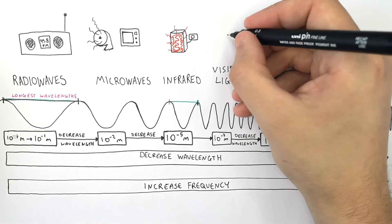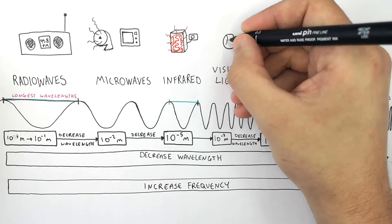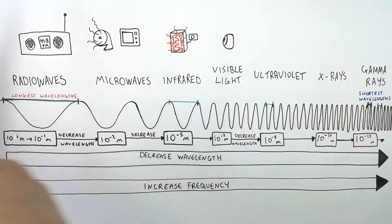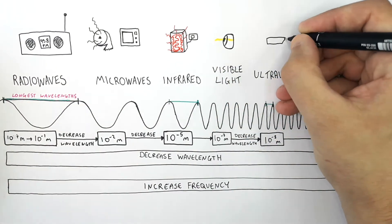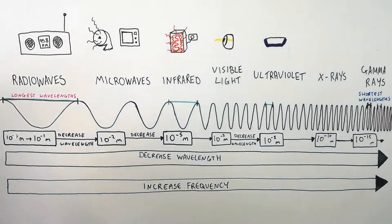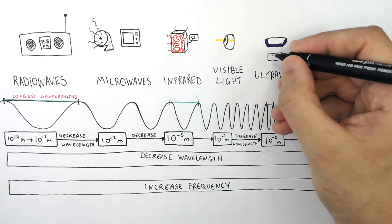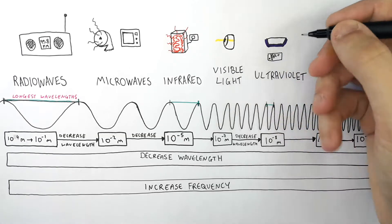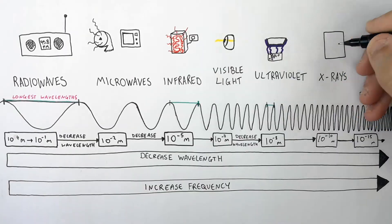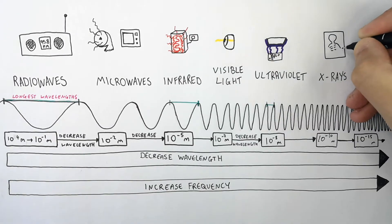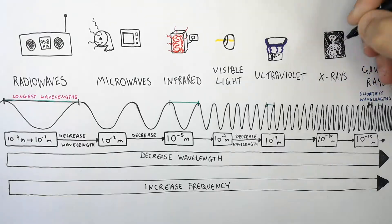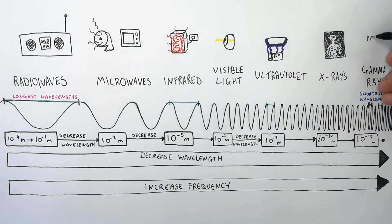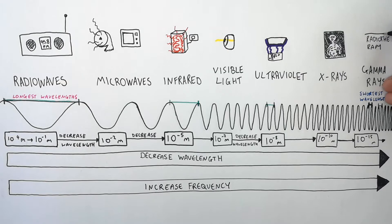We use visible light to see, but it also has other uses which you'll learn about in another video. We use ultraviolet light in many different ways, but one of the main uses is to check for forged banknotes. X-rays are used in hospitals to determine whether bones are broken. And gamma rays are used in hospitals too, for radiotherapy, which is to treat cancer patients.